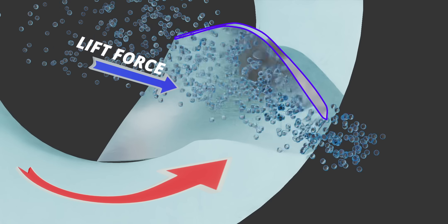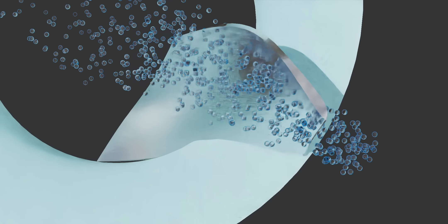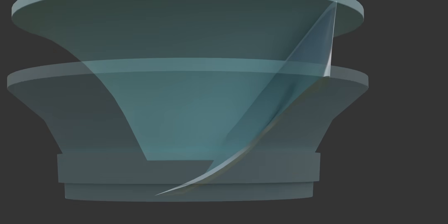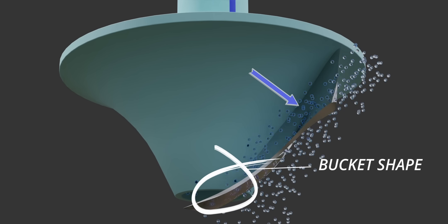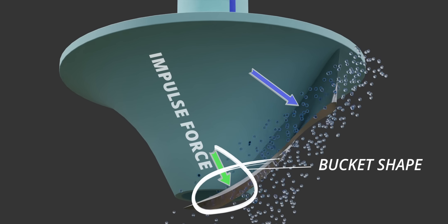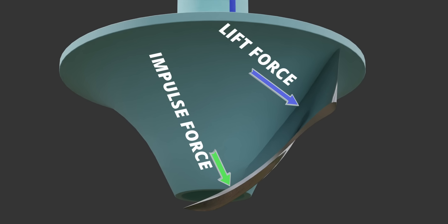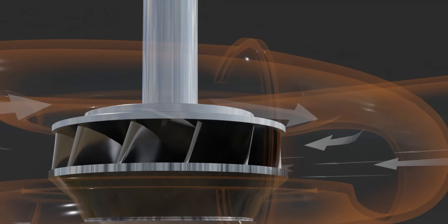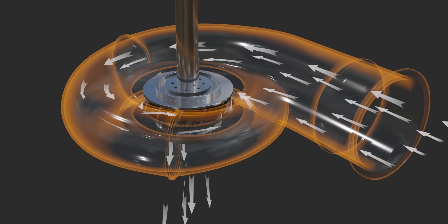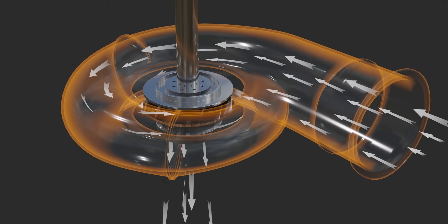But the journey of fluid particles is not over. Just before they leave, they hit the bucket-shaped portion of the turbine blade, generating pure impulse force. Both these forces, the lift force and the impulse force, make the runner turn. This is how energy is extracted from water at Hoover Dam.